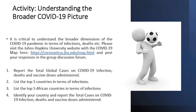Here are the issues we want you to post on the group platform: number one, report the total global cases of COVID-19 infection, deaths, and vaccine doses administered. Number two, list the top five countries in terms of infections. Number three, list the top five African countries in terms of infections. And lastly, identify your own country and report total COVID-19 infections, deaths, and vaccine doses administered. This will give us a good understanding of the pandemic globally, regionally, continentally, and at a national level.